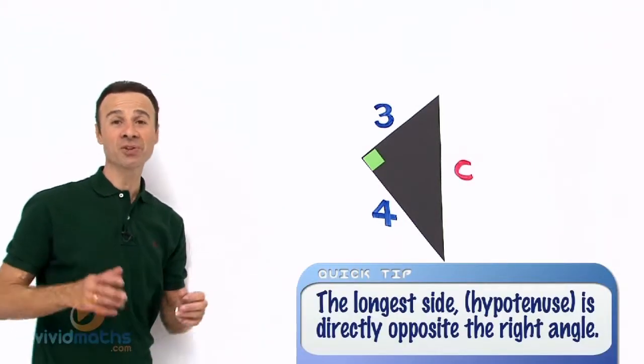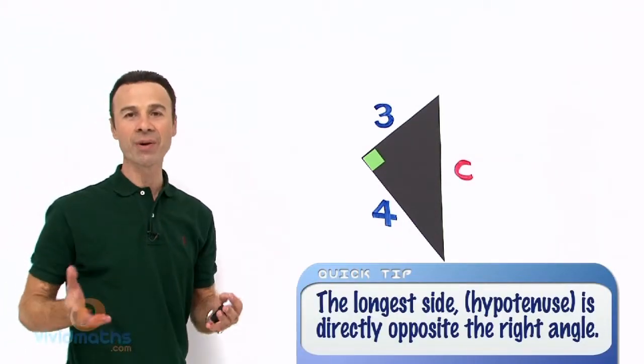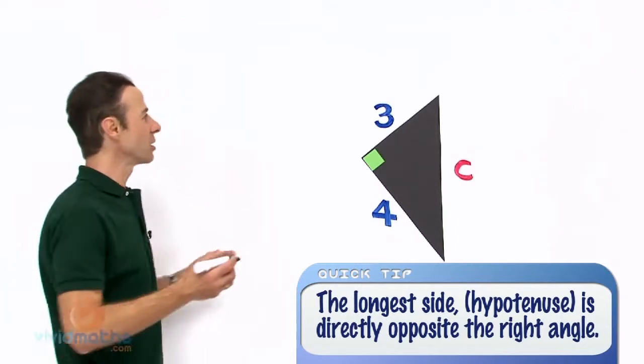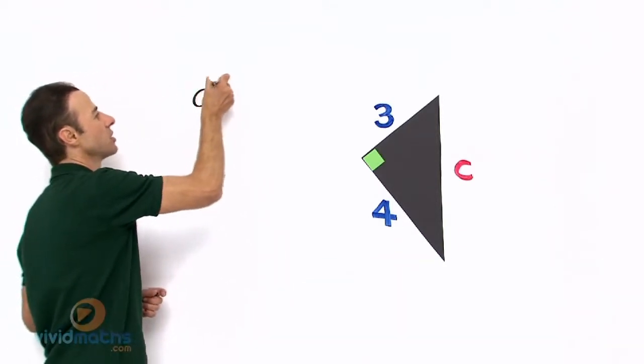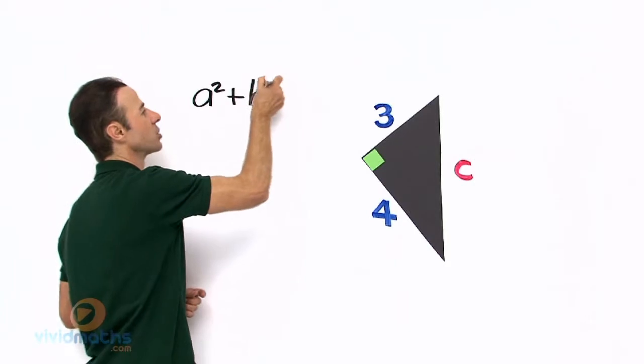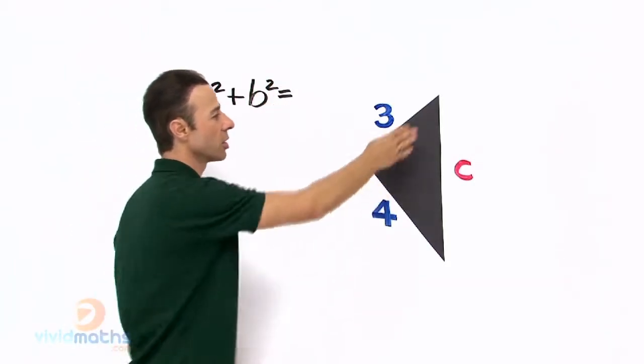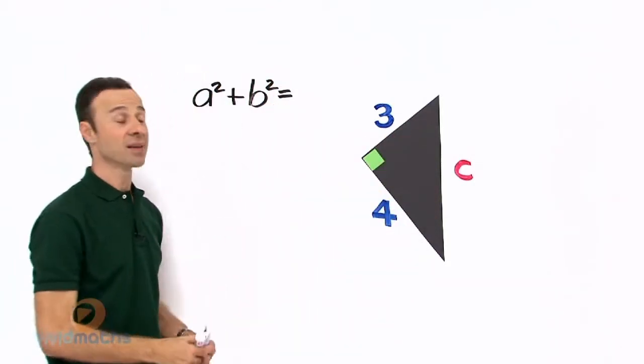So let us use the Pythagorean theorem or the equation, and that is all about squaring numbers. The formula actually looks like this: a² + b² equals the longer side, the hypotenuse, c².